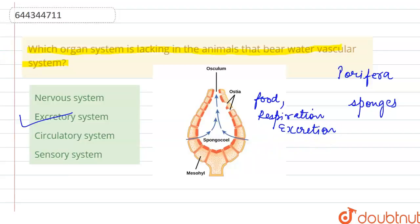Excretion, nutrition, and respiration—it is all happening through the water current. So they do not have the need for a specialized excretory system for that. This is the one in which the water vascular system is present.